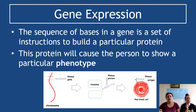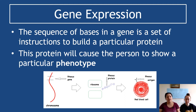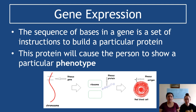Gene expression essentially is protein synthesis. But there's an important connection you need to make behind this idea of a gene being a code that makes a specific protein, and then that protein actually having a physical effect on an organism, particularly humans. So the sequences of bases in a gene — all those A's, G's, C's, and T's that we talked about in structure of DNA — are going to help build a particular protein, and that protein will cause a person to show a particular phenotype.